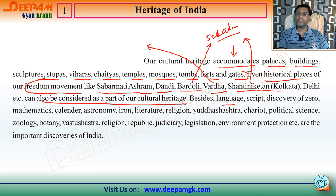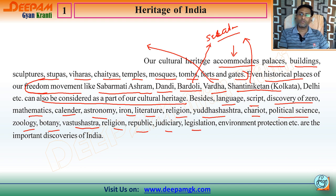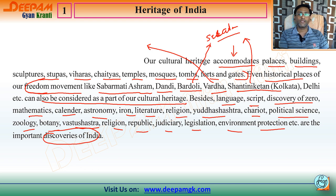Besides these, languages, script, discovery of zero, mathematics, calendar, astronomy, iron, literature, religion, Yudhishastra, chariot, political science, zoology, botany, Vastu Shastra, republic, judiciary, legislation, and environment protection — all are important discoveries of India developed here. That is why these can also be considered our cultural heritage.